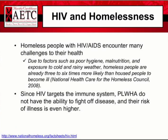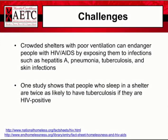Homeless people with HIV AIDS encounter many challenges due to their health. Due to poor hygiene, malnutrition, and exposure to cold or rainy weather, homeless people are already three to six times more likely than housed people to become ill. Since HIV targets the immune system, PLWHA do not have the ability to fight off disease and their risk of illness is even higher. Challenges include crowded shelters with poor ventilation that can expose people with HIV AIDS to infections such as hepatitis A, C, pneumonia, tuberculosis, and skin infections. One study shows that people who sleep in a shelter are twice as likely to have tuberculosis if they are HIV positive.